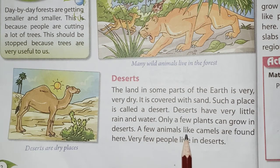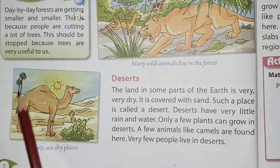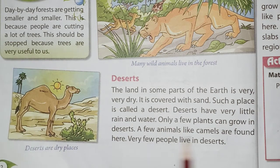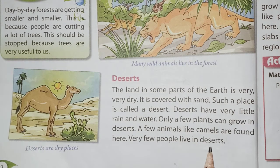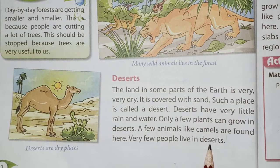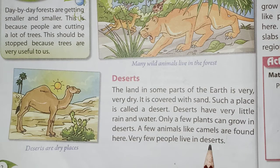A few animals like camels are found in deserts. Very few people live in deserts. Why? Because deserts receive very little rain, so they have very little water, and water is our basic need. We need water for our daily activities, so there are very few people living in deserts.